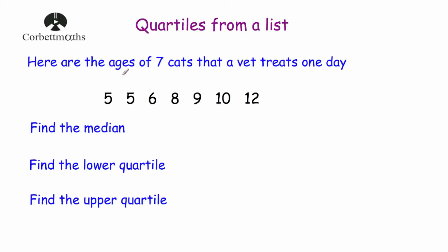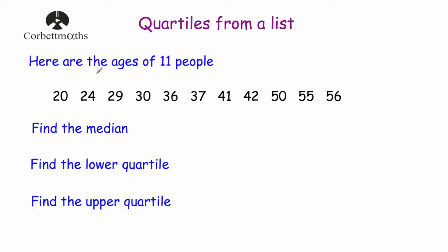So let's have a look at some questions. Here are the ages of 11 people: 20, 24, 29, 30, 36, 37, 41, 42, 50, 55 and 56. We're asked to find the median, lower quartile and upper quartile. To find the position of the median, we take 11, add one to get 12, and divide by two, giving us 6. So the median is the sixth value — counting to the sixth position gives us 37. So 37 is the median.